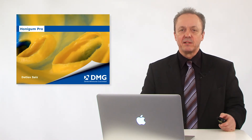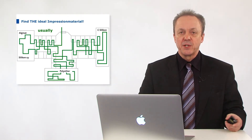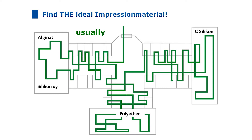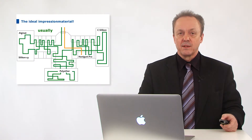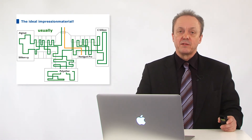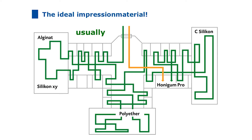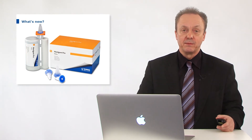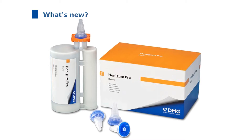A warm-hearted welcome to the video tutorial of Honeygum Pro. Even today the topic of impression taking in dental practices is still an item for which the dentist has to make compromises. So far there has not been any material on the market which is really ideal for what the dentist really needs. The dentists are always on the lookout for the ideal impression material, from alginates, C-silicones to polyethers and a wide variety of silicones, especially A-silicones. The path now leads directly to Honeygum Pro. Why is Honeygum Pro the ideal impression material? Let's look at some more details in the next few minutes.